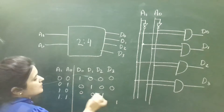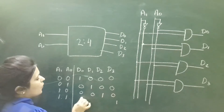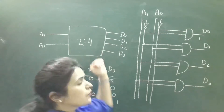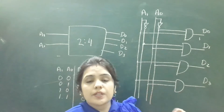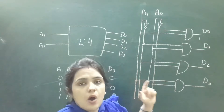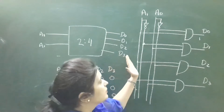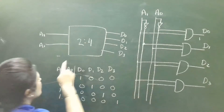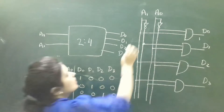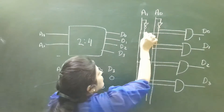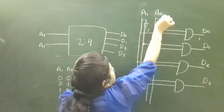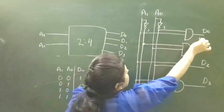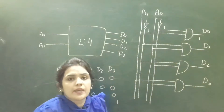This is the truth table of the simple 2-to-4 line decoder, and this is the logic diagram of this decoder without enable input. We can see when the value of A1 and A0 is 00, complement of 0 is 1 and complement of 0 again is 1, so 1 AND 1 gives 1, and D0 will be high. You can verify other inputs similarly.